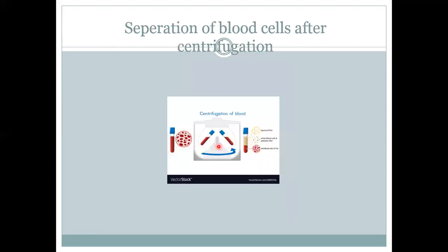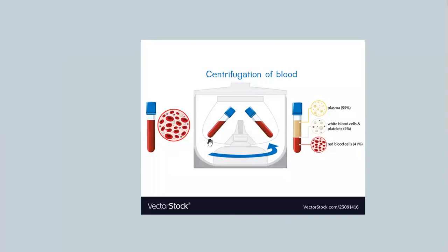This shows the separation of blood cells after centrifugation. Blood consists of red blood cells, white blood cells, and platelets. After centrifugation it divides into different layers: red blood cells, being heavier, are collected at the bottom making up 41% of blood; the middle layer consists of white blood cells and platelets making up 4%; and plasma, being lighter, collects at the top making up about 55% of blood.